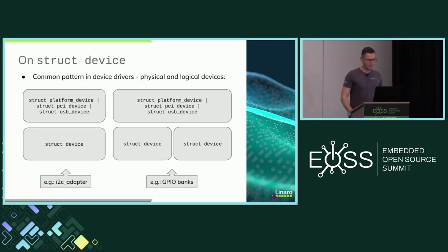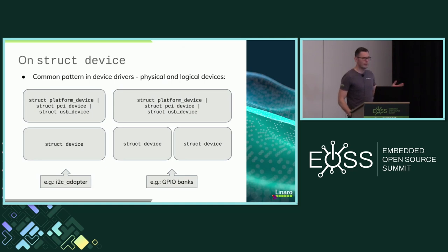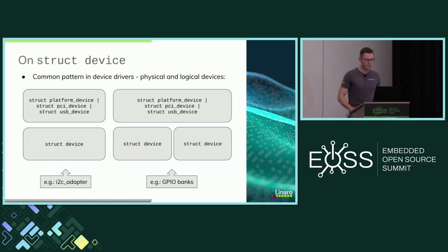Why do we allocate those struct device instances? We often have a split between physical device representation and logical device representation. We have a platform device or whatever device that will come out when the device is detected and probed, and it will create a logical device — for instance, an I2C device or a GPIO device underneath one layer below. This is what I refer to as a logical device, where you can have two devices representing two GPIO banks on a single chip, which one layer above is represented as a single platform device.